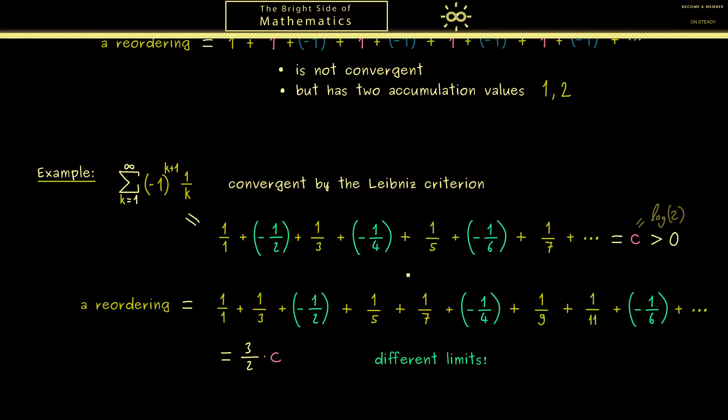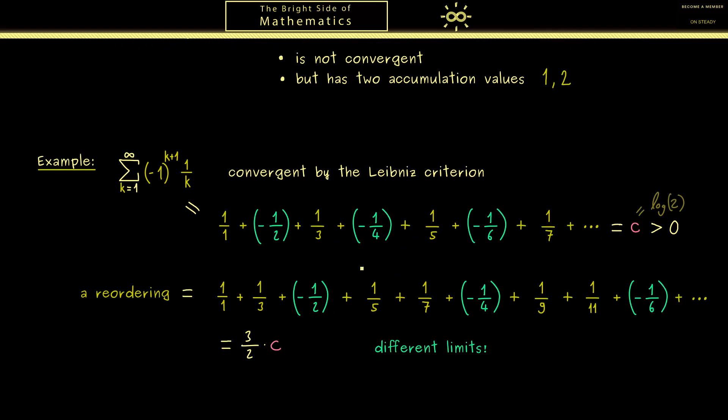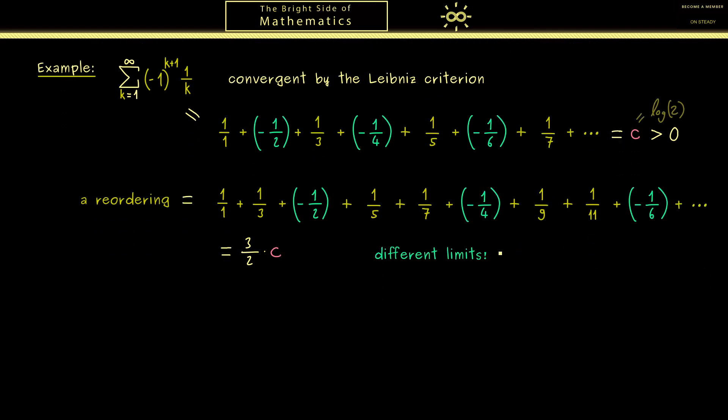I want to focus on the result that this strange thing here cannot happen for an absolutely convergent series. Therefore for such a series, it's always allowed to reorder the whole series without changing the limit. But before we do this, let's finally fix the definition of a reordering.